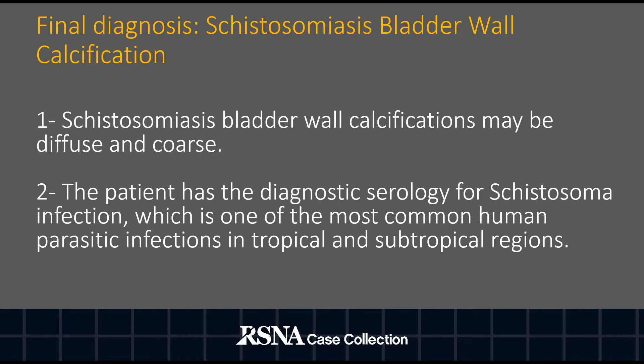Final diagnosis: Schistosomiasis bladder wall calcification. Schistosomiasis bladder wall calcification may be diffuse and coarse. The patient has diagnostic serology for schistosoma infection, which is one of the most common human parasitic infections in tropical and subtropical regions.